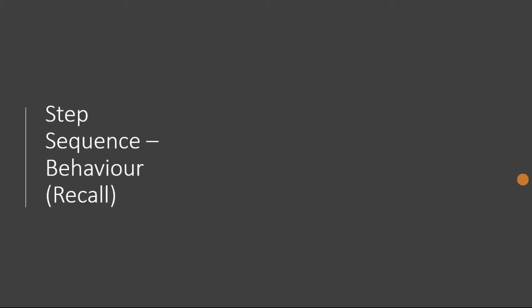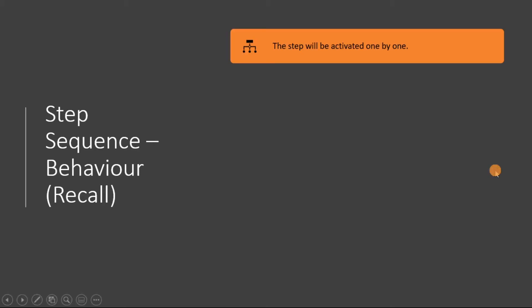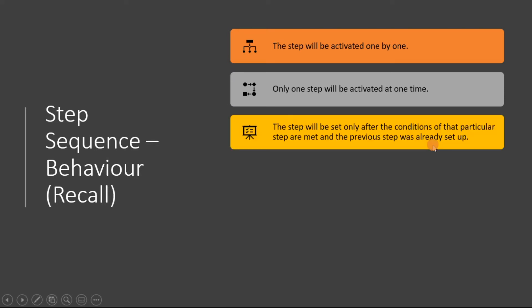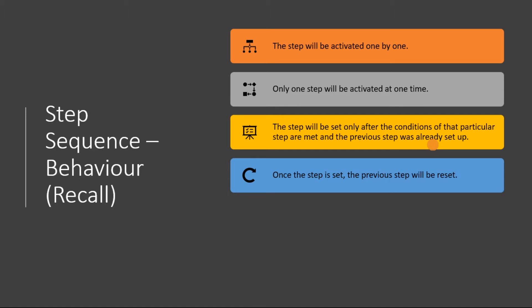To recall, these are the things you need to know in a step sequence. The steps will be activated one by one — it cannot activate two or three steps at one time. Steps will be set only after the conditions for that particular step are met, and the previous process in the previous steps has already been set up.